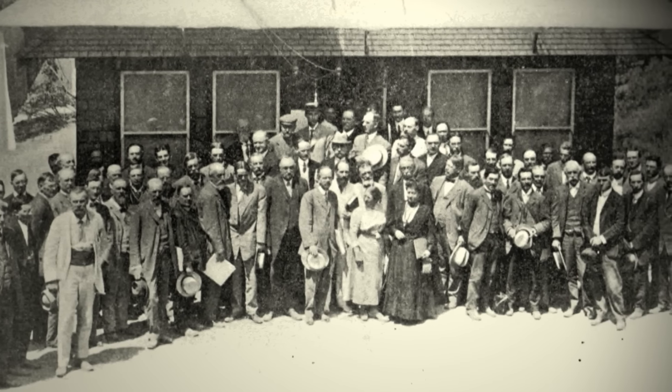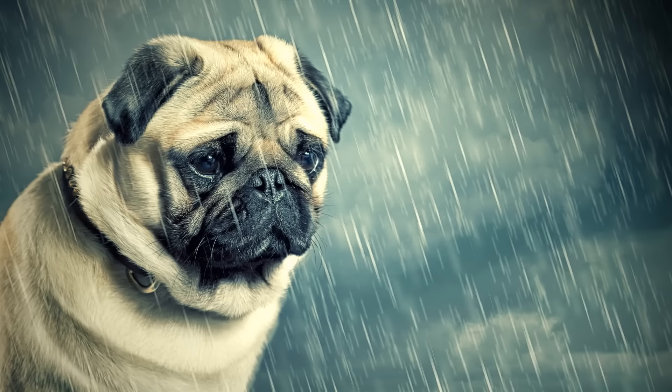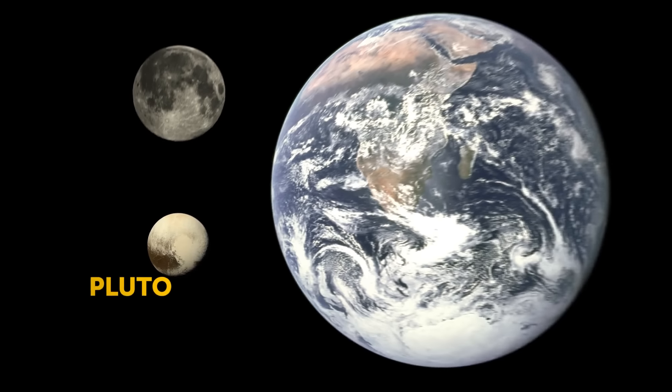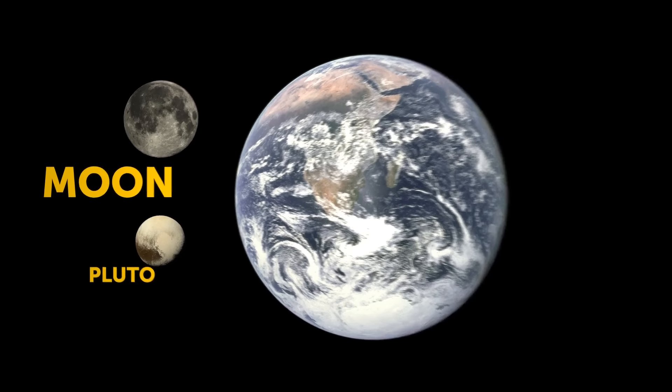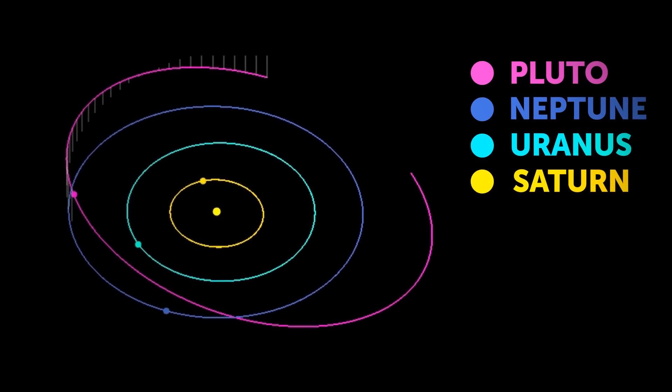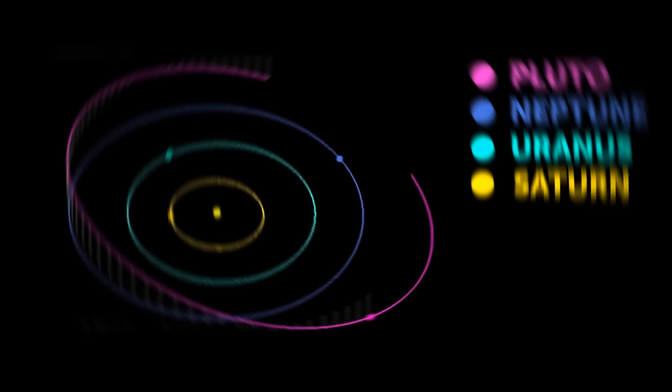Lowell's team was on cloud 9 after the discovery, but their celebrations were short-lived. Soon, they found out that Pluto is way too small to be having that much of an effect on the surrounding planets, and it was also too far away from them. So, it was back to the drawing board.